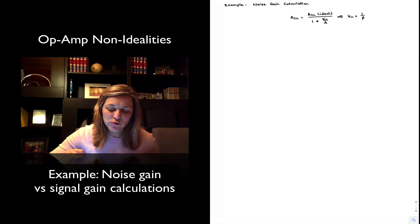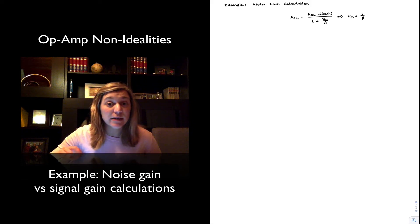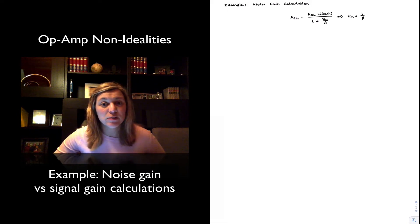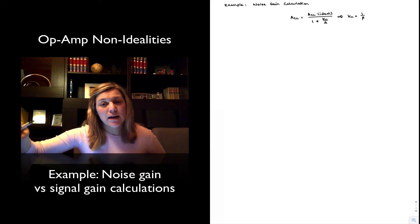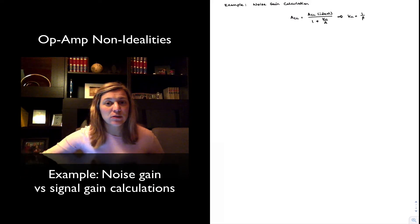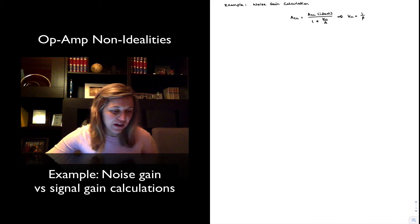From that expression, we can derive that the noise gain is actually equal to one over beta, beta being the attenuation, the feedback factor, basically the attenuation experienced by the output signal as it is sampled and fed back into the input of the negative feedback amplifier, the closed-loop amplifier.